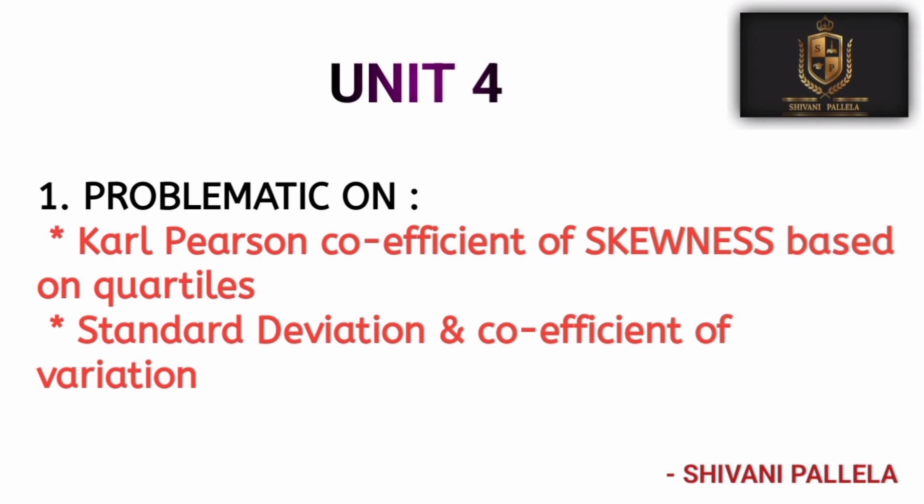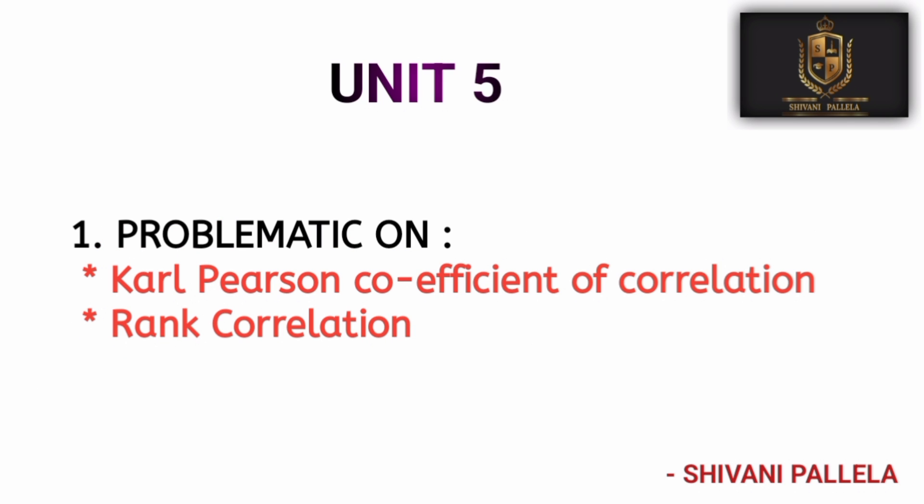For Unit Four, the most important problematic method is Karl Pearson's Coefficient of Skewness — this is a compulsory question. The second option in Unit Four is standard deviation and coefficient of variation. If you are perfect with Karl Pearson's Coefficient of Skewness, you can absolutely get 12 marks in Part B.